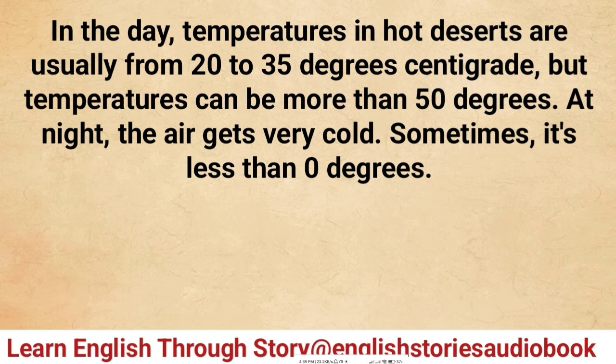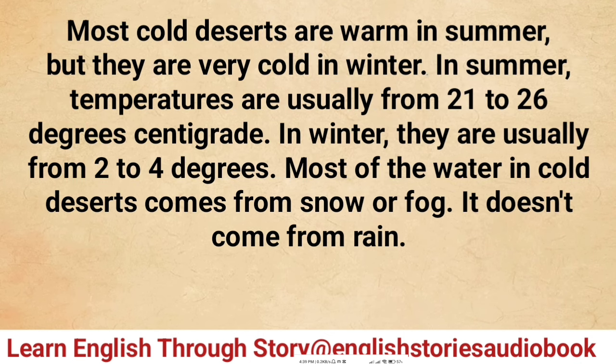In the day, temperatures in hot deserts are usually from 20 to 35 degrees centigrade, but temperatures can be more than 50 degrees. At night the air gets very cold — sometimes it's less than zero degrees. Most cold deserts are warm in summer but very cold in winter. In summer, temperatures are usually from 21 to 26 degrees centigrade.